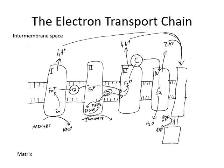In our electron transport chain we have four cytochromes. This is the best-described electron transport chain and it's considered to be the main method whereby most human beings make ATP through electron transport. Alternative pathways have been described — there are other ways of using electrons to make ATP besides this four-step electron transport chain — but this is the main one, so we're going to focus just on this one.